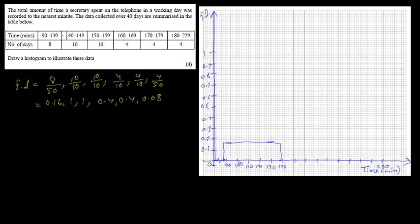The next bar is 140 to 149, meaning 139.5 to 149.5. So this starts at 139.5 and goes to approximately 150, and the height is 1 — we go all the way up to 1. The next one is 149.5 to 159.5, so this goes to 160, and the height is also 1.